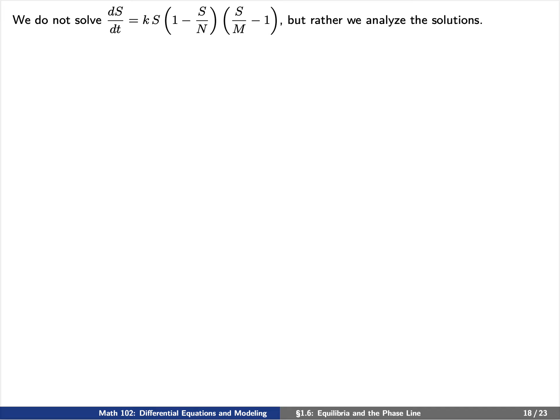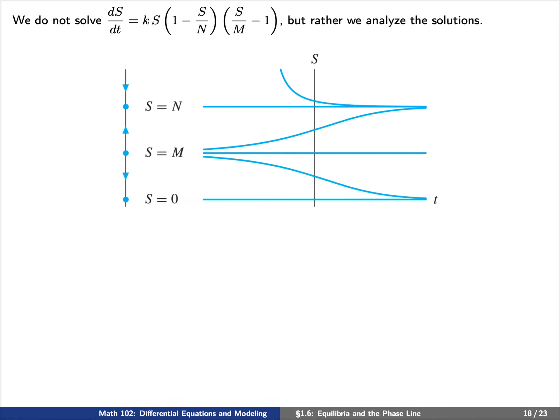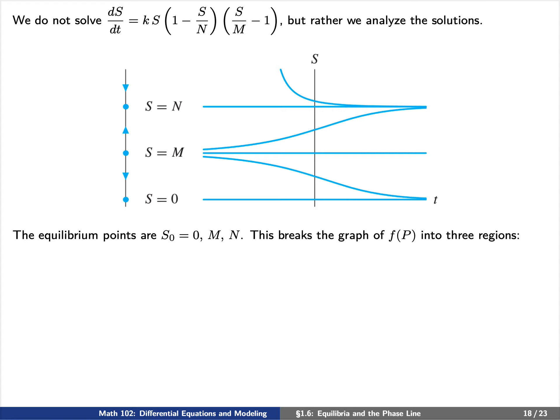We're not going to try to solve this differential equation, but rather analyze its solutions. We can draw a slope field as well as a phase line. There are three equilibrium points, found by setting f(s) equals 0: those equilibrium points are 0, m, and N. This gives our phase line three regions.